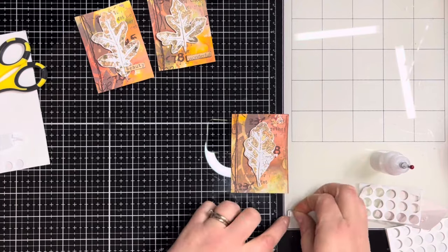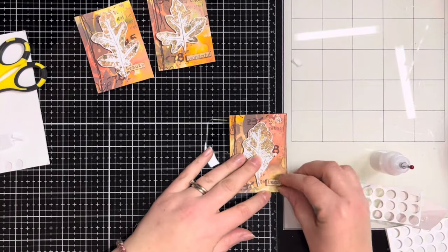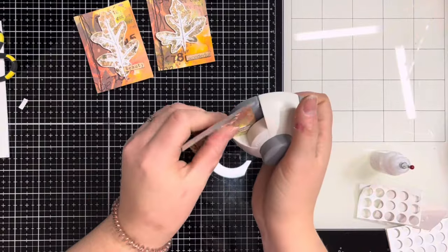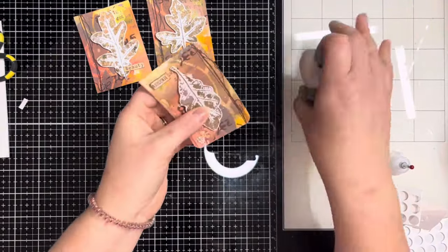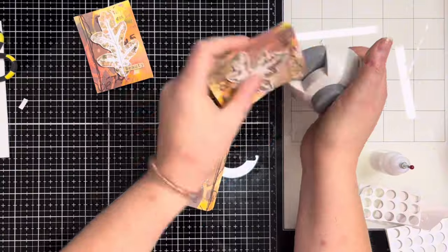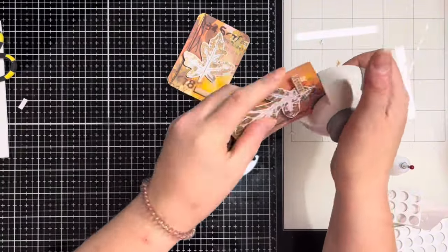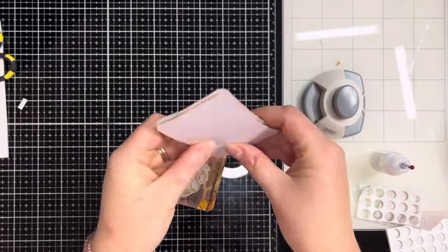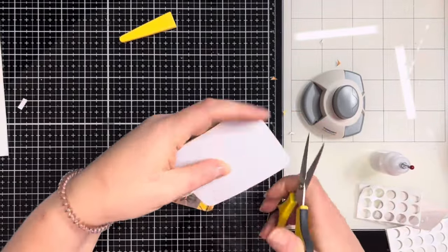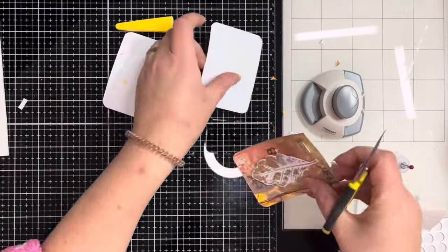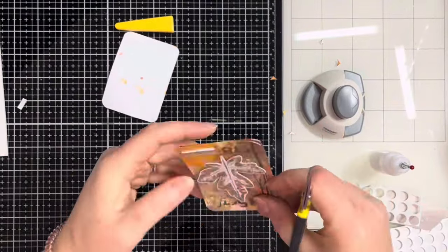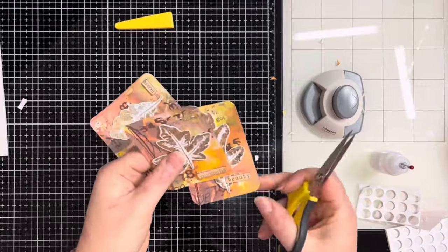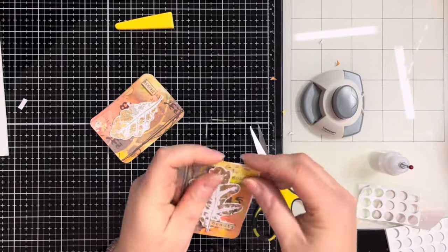Once all the sentiments are stuck down, to finish them off I'm rounding the corners with my corner rounder. I should have done this before sticking the sentiments on because the corners where the sentiments are I'm not able to round in my corner punch. What I'm doing is putting two ATCs back to back so that one curved corner is against one I can't curve, then going around the edges with my scissors.